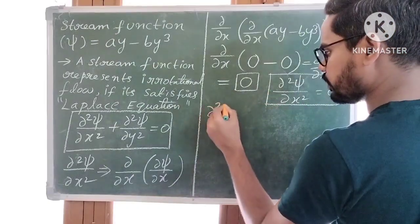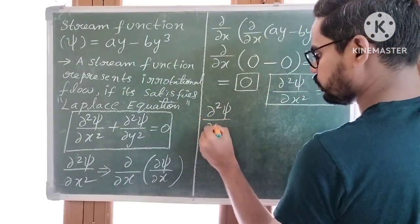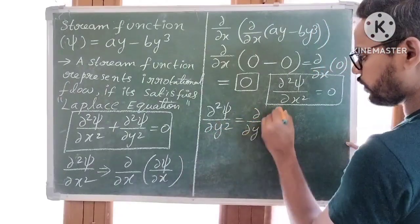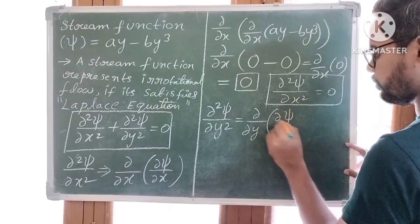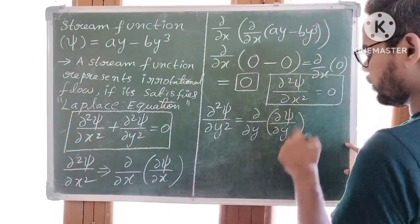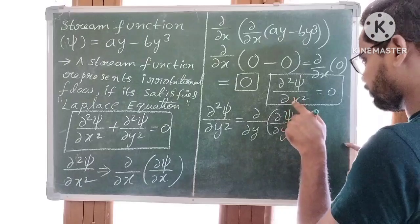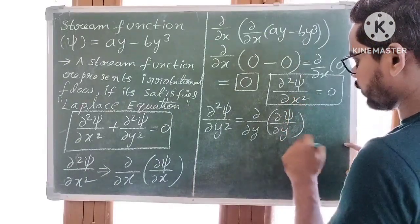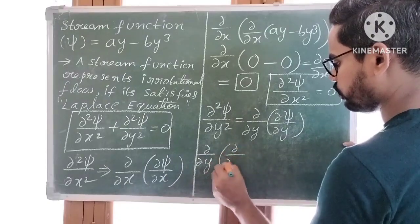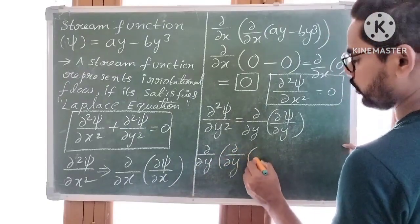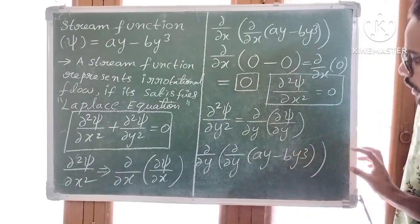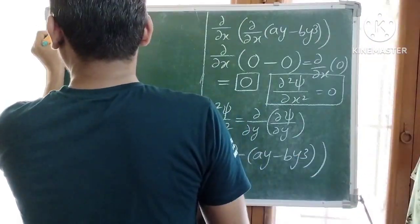Now let us find ∂²Ψ/∂y². The next term is ∂²Ψ/∂y². It can be written as ∂/∂y of (∂Ψ/∂y). Now we are doing partial differentiation of Ψ with respect to y. So ∂/∂y of (∂/∂y of Ψ), where Ψ is Ay minus By³.